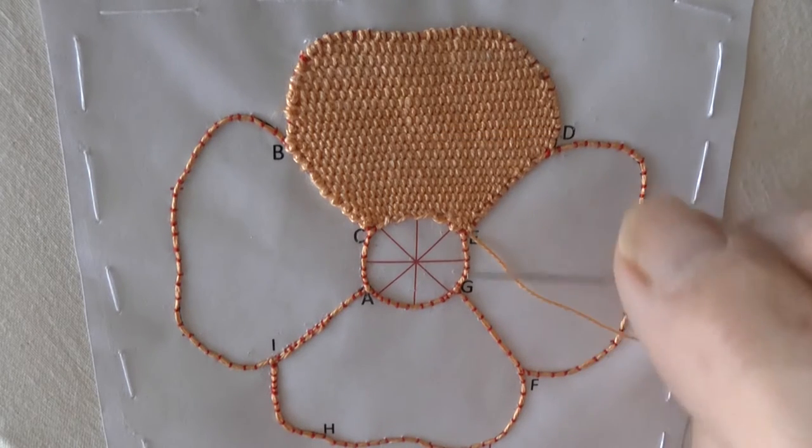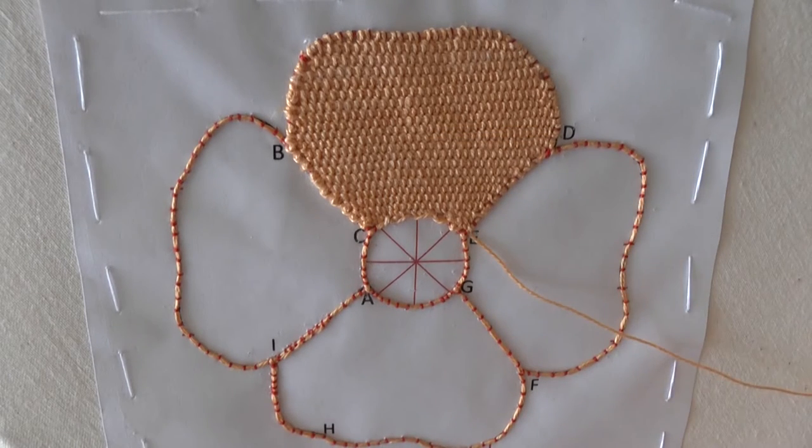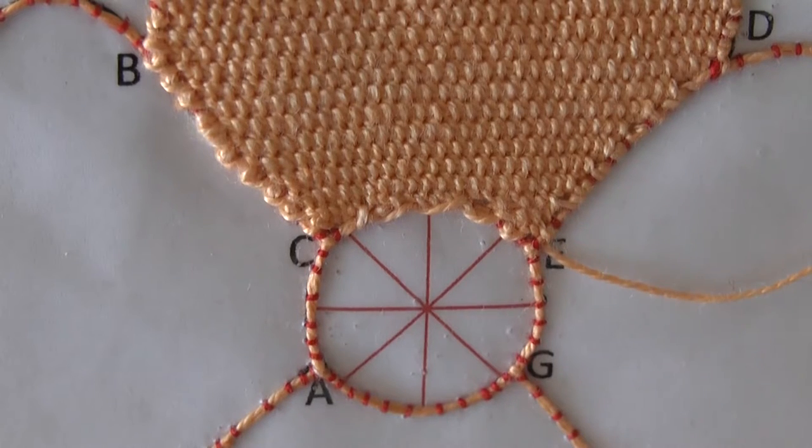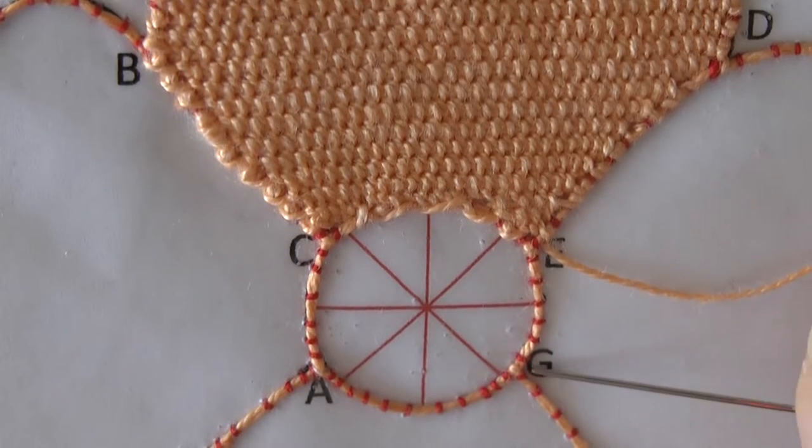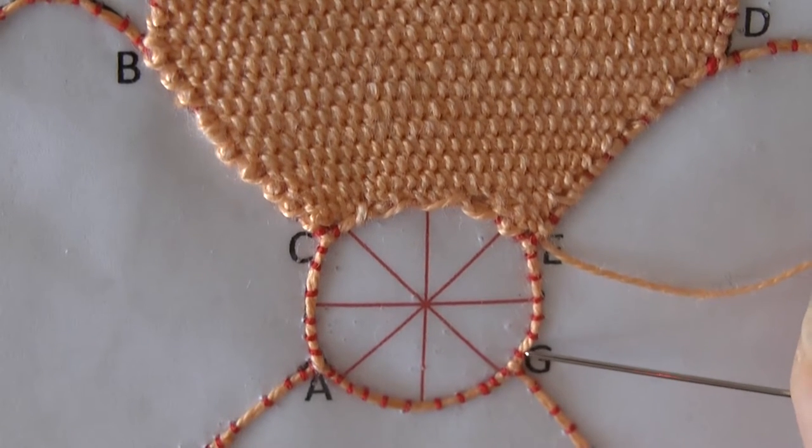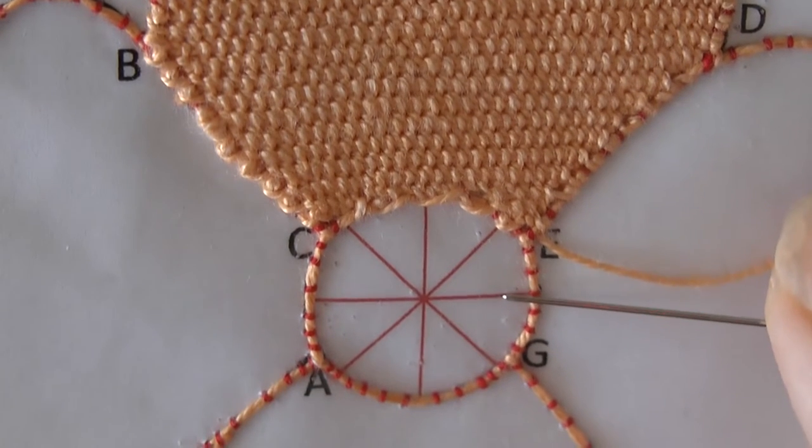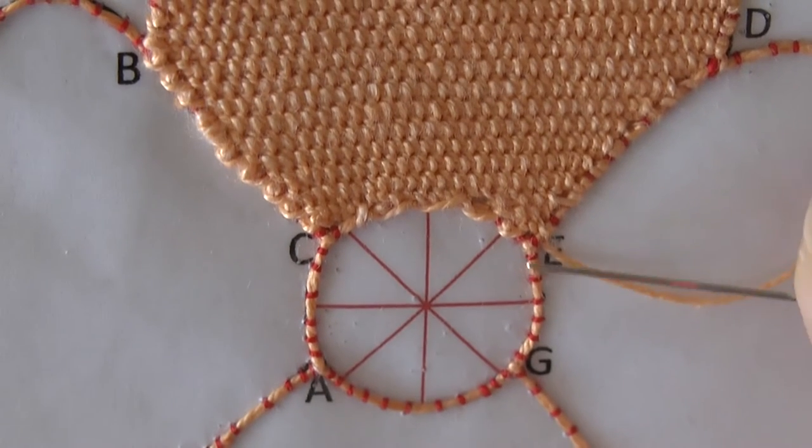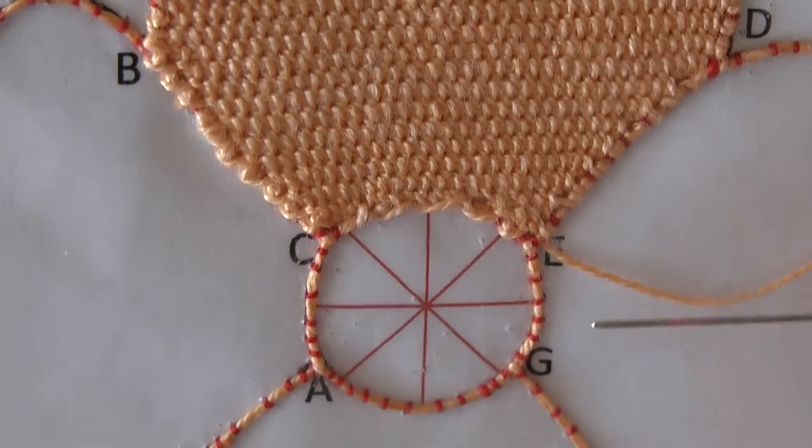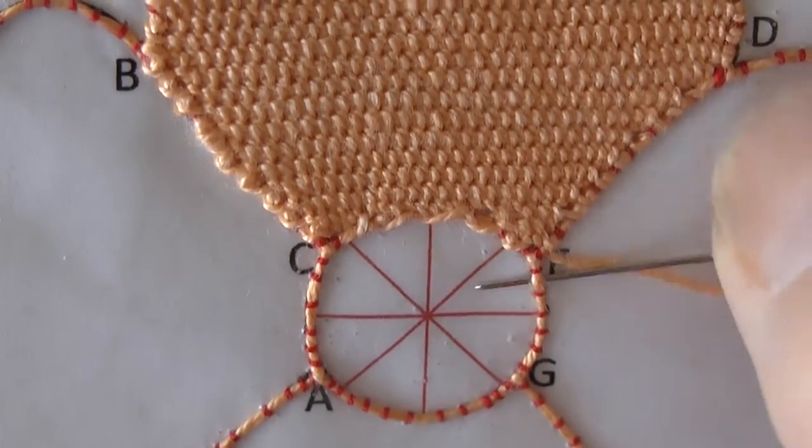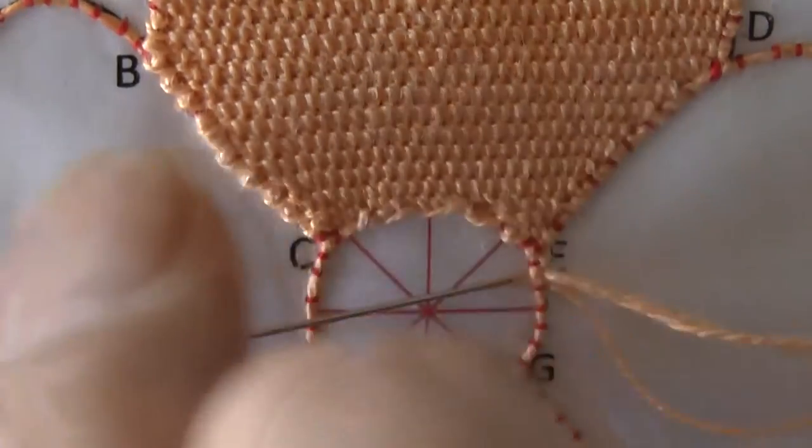To at least make the spokes, if not start the filling of this spider's web stitch. If you started a new thread and come up to G, then you'll need to whip up this part of the circle to the end of this spoke. In my case, I've got to whip down, so simply going under the cordonet a couple of times until you reach the end of that spoke.